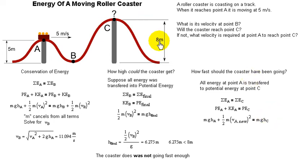H C is equal to 8 meters. H A is equal to 5 meters. M's cancel. Solve for V A new: square root 2 G times H C minus H A equals 7.671 meters per second. That's how fast the cart needed to be going at point A to make it all the way to the top, just barely. It has to go at least that fast. Any slower, and it will not get that far.